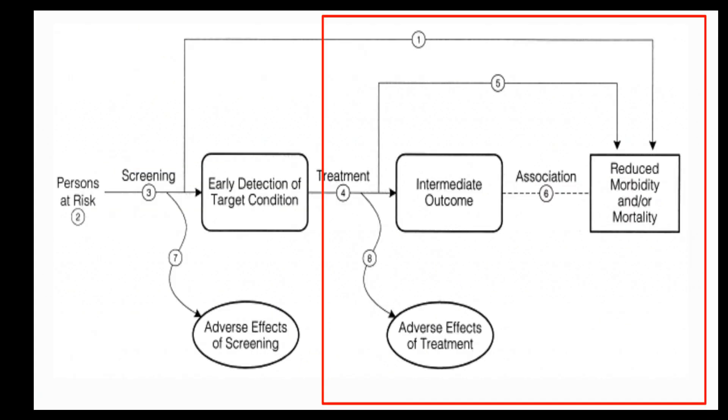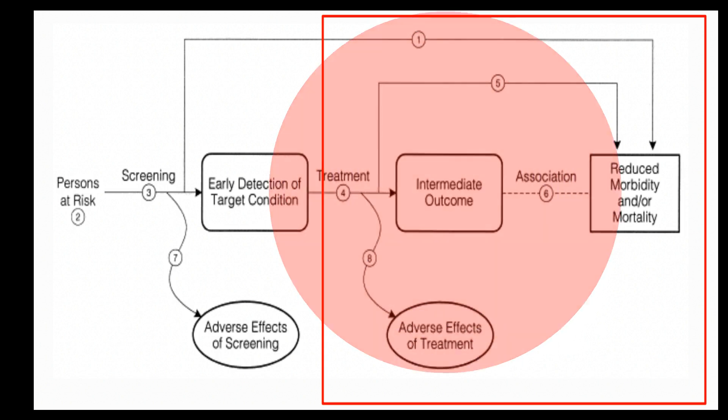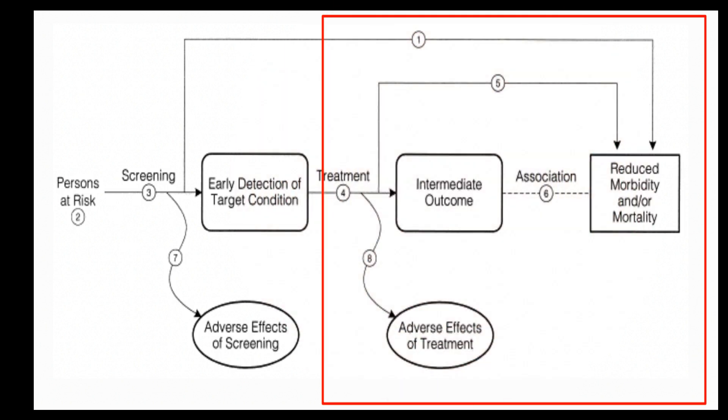So you get an interim outcome, which might be detection of breast cancer, the type of surgery a person has, or progression of disease. Those are all intermediate outcomes, where the final outcome that you're interested in is mortality, or perhaps something else depending on your disease.